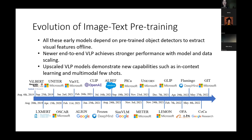Meanwhile, these upscaled VLP models are beginning to demonstrate new capabilities, such as in-context learning and multimodal few-shot learning. The representative models include Frozen, Flamingo, CoCa, and PICa.